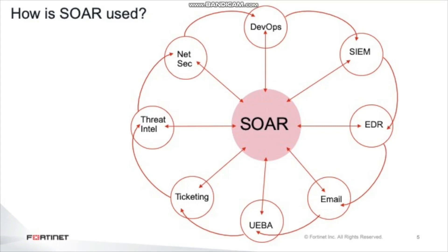To take it a step further, those processes can be translated into a playbook, which is a flowchart-like set of steps, either manual or automated, which can be repeated on demand. This way, you can make sure that every step in your standard operating procedure is followed and have data on exactly what was done, when, and by whom. In general, this capability is called orchestration and automation.